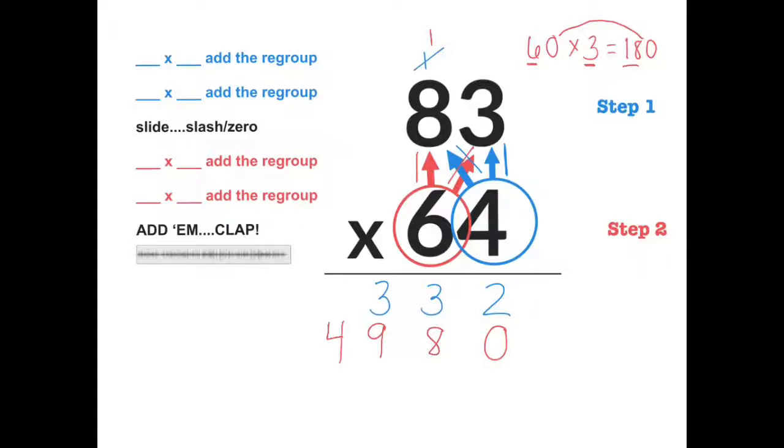And then I move on to adding the products. So I draw my plus sign. Two plus zero equals two. Three plus eight equals eleven. Put a one here and I regroup my one really tiny above my next problem. Then I have three plus nine, that equals twelve. Plus my regroup one is thirteen. So I put a three here, regroup my one really tiny above my four. Four plus one equals five. Then I put in my comma to get an answer of five thousand three hundred twelve.